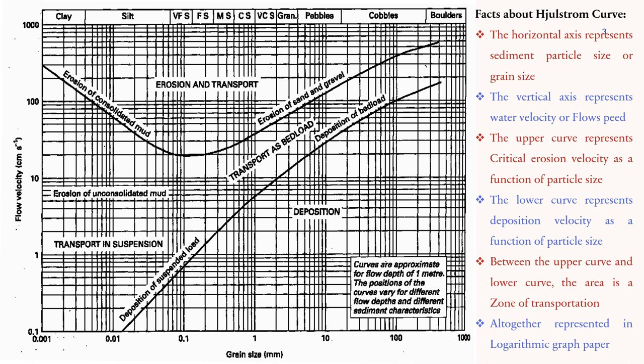The horizontal axis represents the sediment particle size or grain size, and the vertical axis represents the water velocity or flow speed. The upper curve represents the critical erosion velocity as a function of particle size — covering the erosion of consolidated mud and the erosion of sand and gravel. The lower curve represents the deposition velocity as a function of particle size.